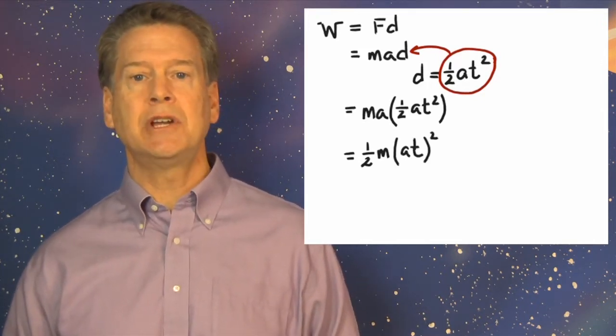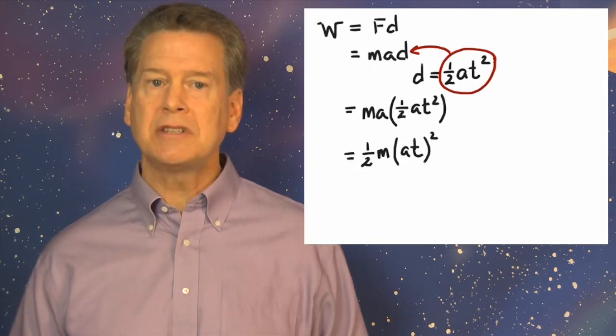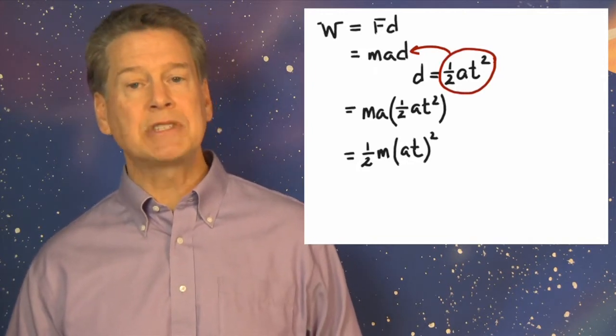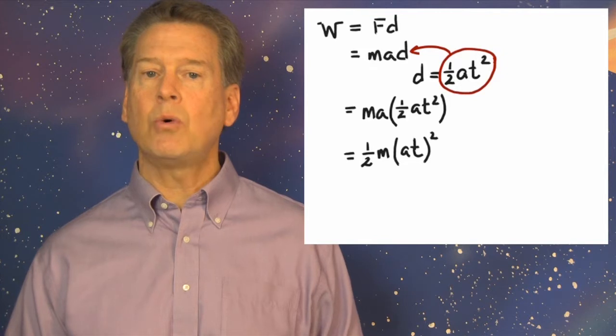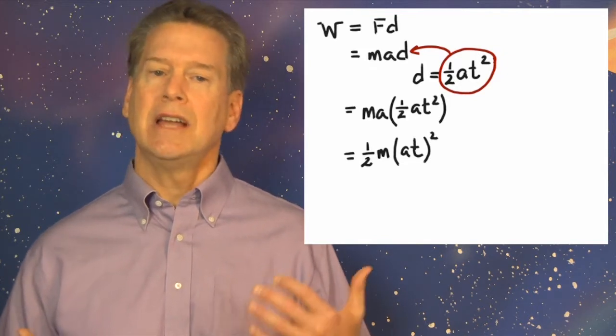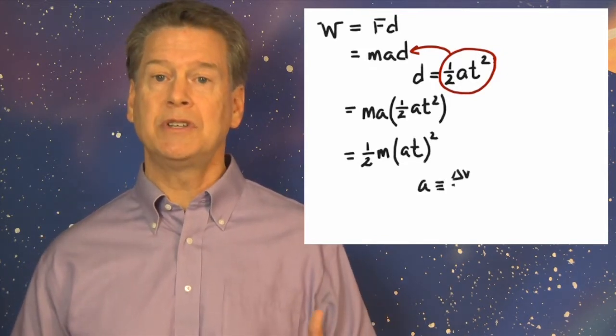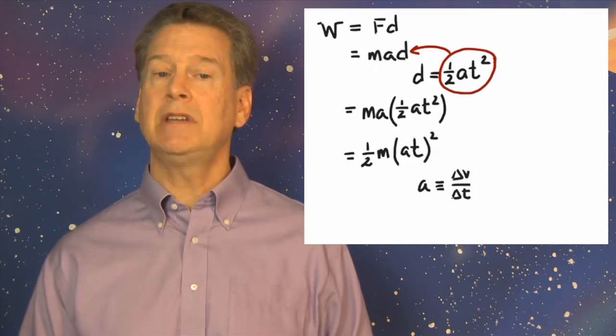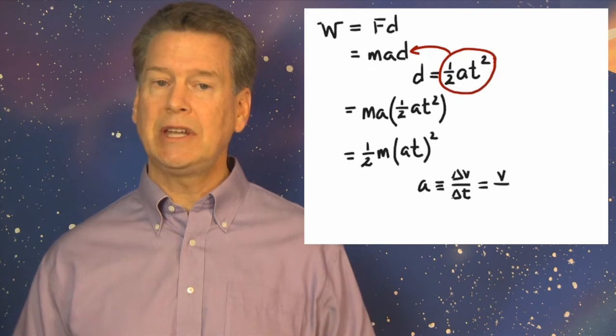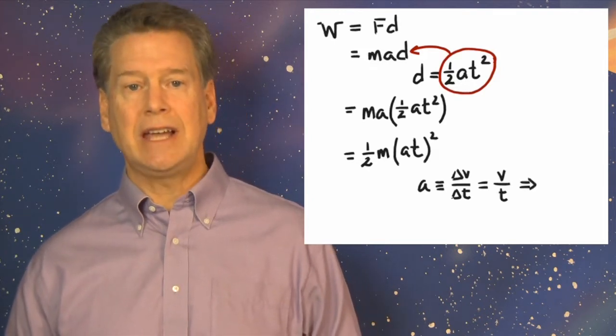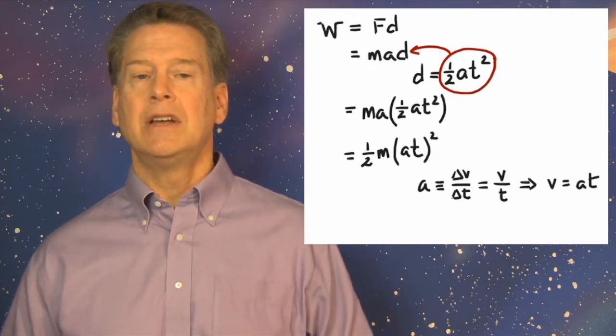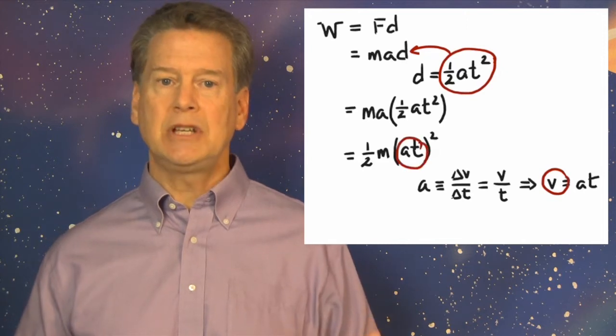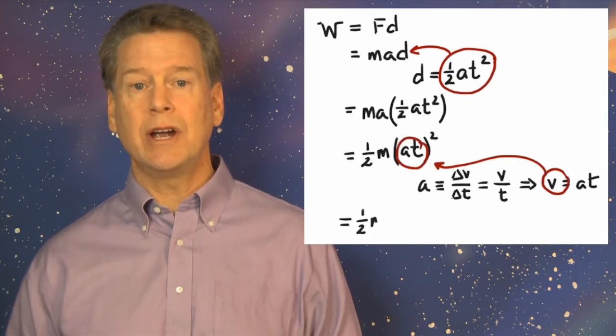And finally, from the very definition of acceleration, we know that constant acceleration times the elapsed time gives the speed acquired. That is, A, which is defined as delta V over delta T, becomes, when initial time and speed are zero, simply V equals AT. So W equals one-half M times V squared.